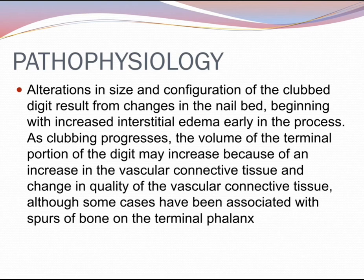What is the pathophysiology of finger clubbing? Alterations in size and configuration of the clubbed digit result from changes in the nail bed, beginning with increased interstitial edema early in the process. As clubbing progresses, the volume of the terminal portion of the digit may increase because of an increase in vascular connective tissue. Some cases have also been associated with spurs of bone on the terminal phalanx.